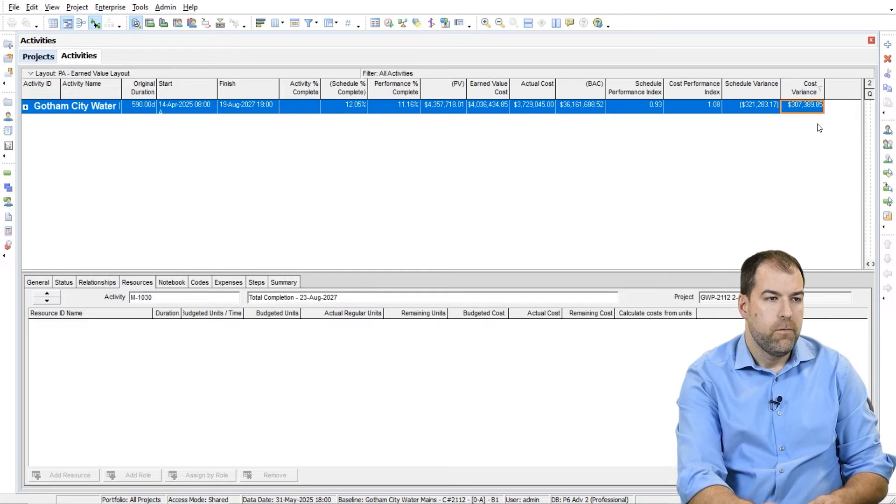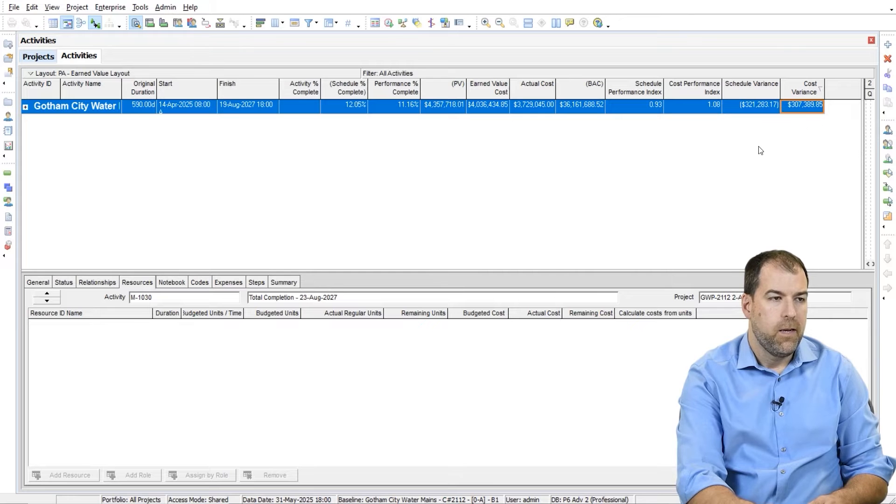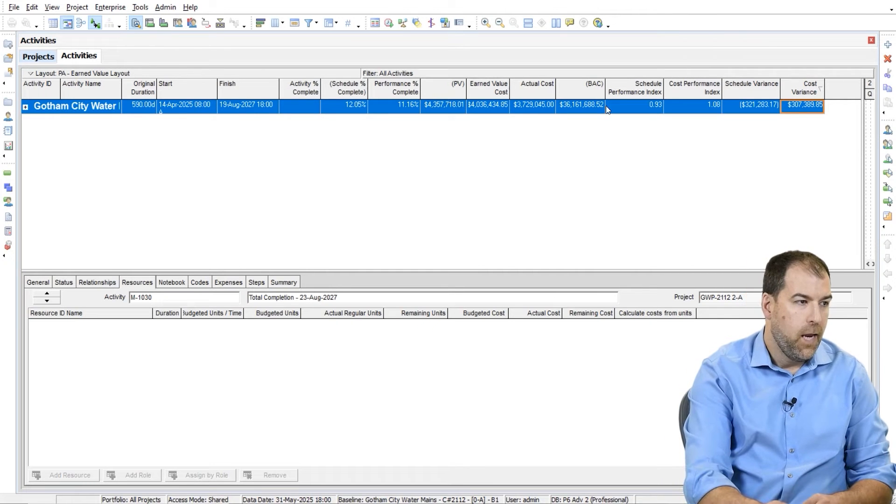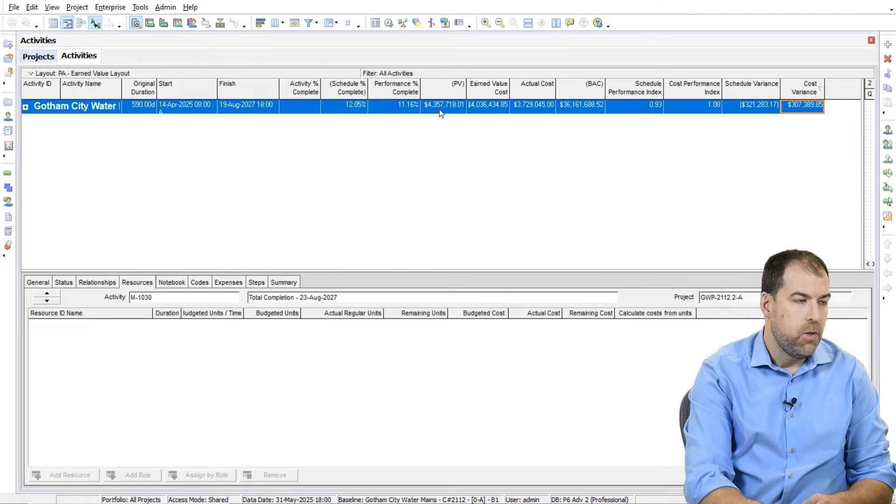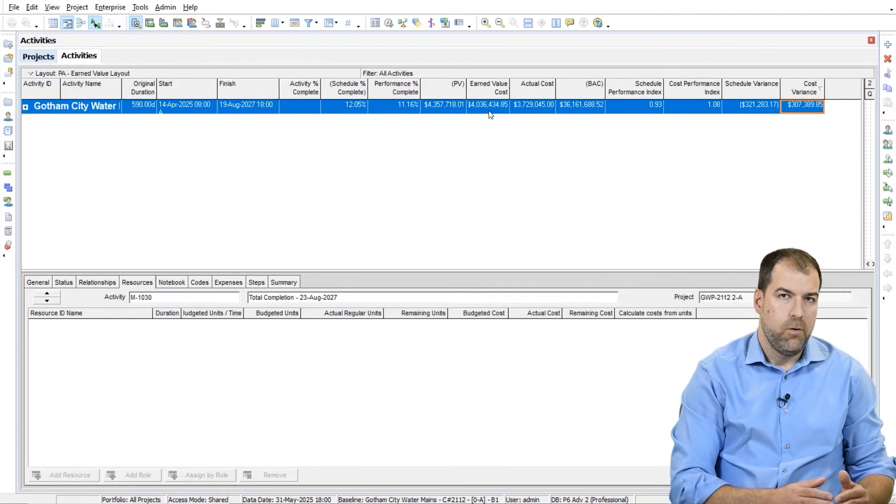Let's go to our Variance Columns to really get a feel for what's going on. And you can see that we've earned a lot, but our planned value is more than what we've earned. So we're lagging a little bit.